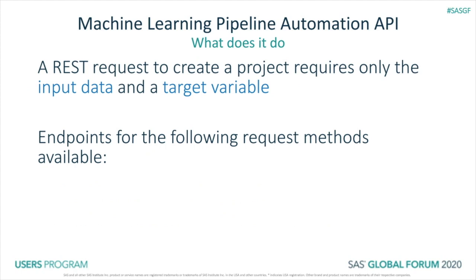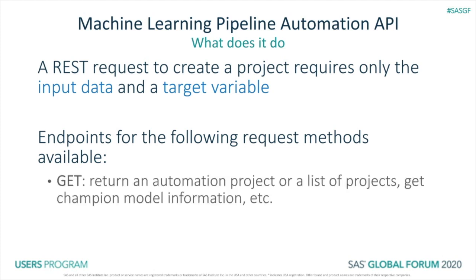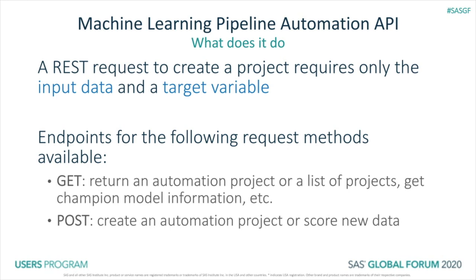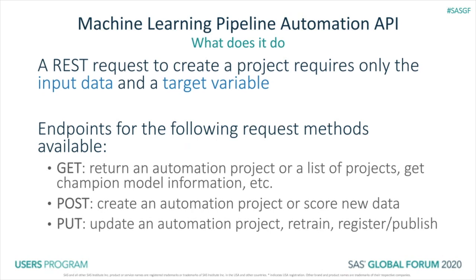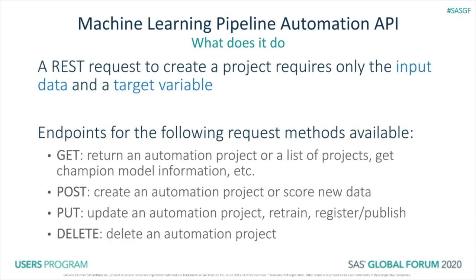A request to create a project requires just the input data and a target variable in order to start the pipeline automation process. Then various endpoints are available to you with the following request methods. You can use the GET request method to return an automation project, return a list of all automation projects, get champion model information for a project, get the current state of a project, or get a list of all currently usable links. You can use a POST method to create an automation project or score new data with the champion model. PUT methods can be used to update an automation project, retrain the project, and register or publish the champion model to an available destination. And DELETE can be used to delete an automation project.